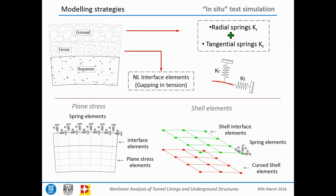To focus the analysis on the structural response, the ground-structure interaction was modeled using radial and tangential springs. Nonlinear interface elements were used to reproduce the ground stiffness and to allow gapping in tension — very important because the lining cannot introduce tensile forces into the ground. Where the hydraulic jacks literally separate the ground from the segment, this nonlinear interface produces the necessary direct separation. This configuration was applied in both plane stress and shell element models.